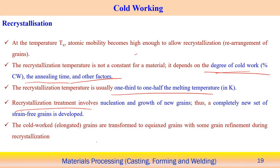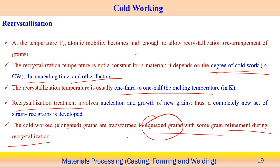Growth of the recrystallized grain is considered the growth stage. Cold-worked grains are transformed into equiaxed grains through recrystallization. Recrystallization achieves an almost uniform grain size with strain-free, smaller grains compared to the initial deformed grains — this transformation to equiaxed grains is called grain refinement. This occurs when annealing is performed after or during cold working.